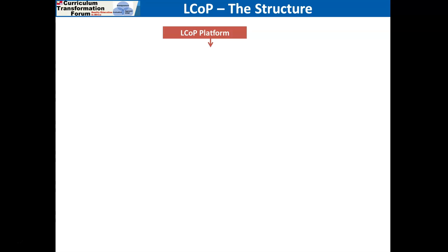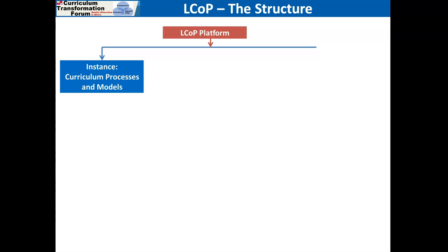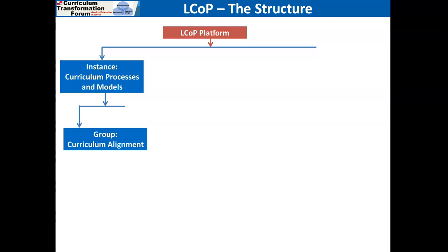Let's look at the structure of the platform. The platform is made of what we call instances — an instance is a super group where members can decide to join. For example, I created two instances: the first is 'Curriculum Processes and Models,' where people can decide to be members of this instance and also to be members of the groups within it. Within an instance you have groups, which may reflect particular interests of instance members — for example, I created a group named 'Curriculum Alignment' because this is a big issue in education.